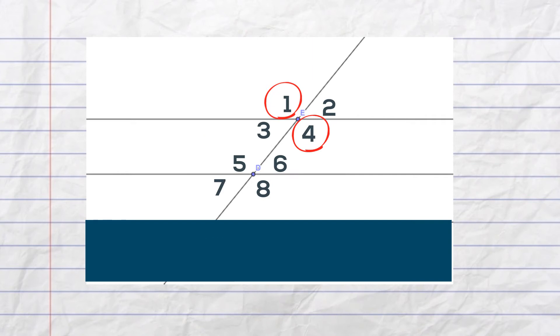Okay, what's the name of these two angles? These two angles are vertical angles and they are congruent angles.